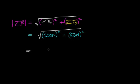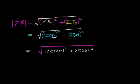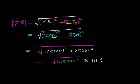When I square 100 I get 10,000 Newtons squared, and squaring 50 gives 2,500 Newtons squared. Adding those gives 12,500 Newtons squared, and taking the square root of 12,500 gives approximately 111.8 Newtons. So the magnitude of the net force in this case is 111.8 Newtons.